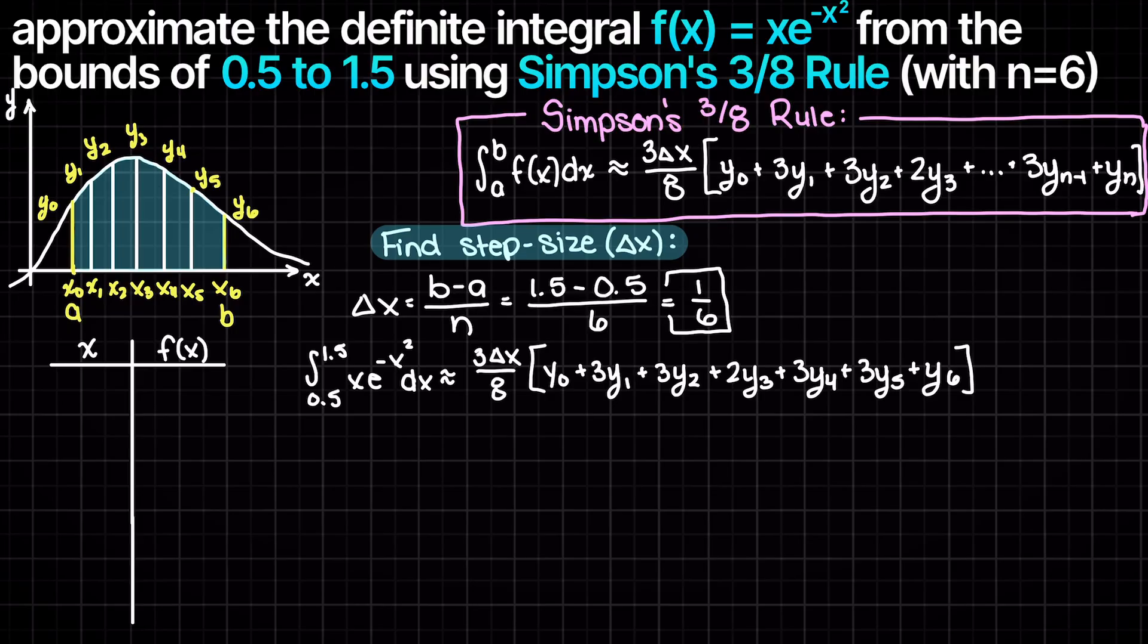Let's now make a small table of input to output pairs that we need to find. Beginning at our lower bound of 0.5, let's work out all of the points that we need to find, adding a step size every time.